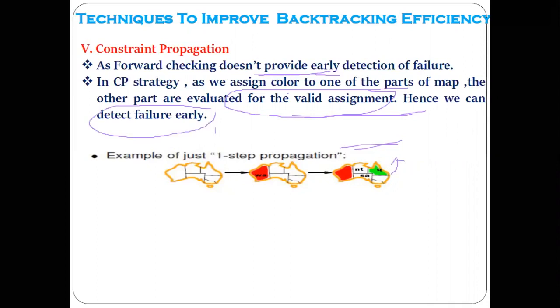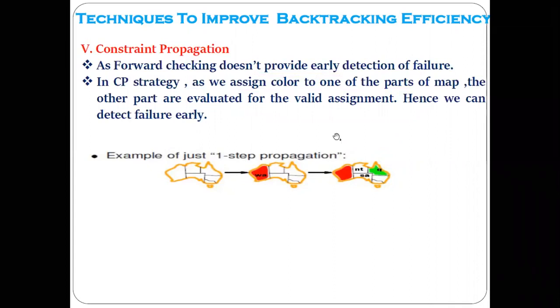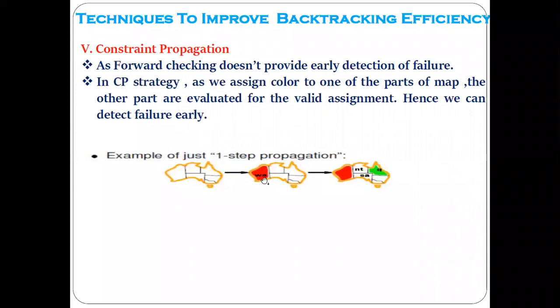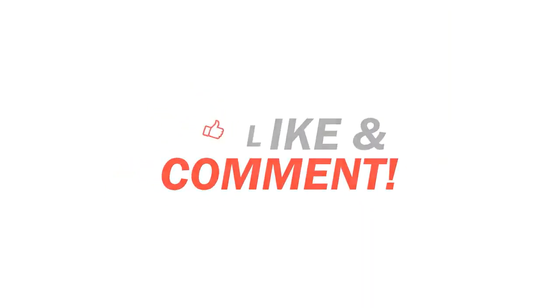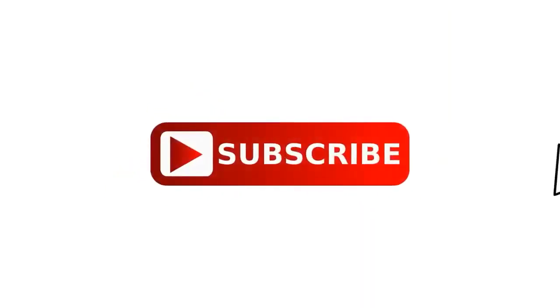To summarize the five techniques: First, Least Constraining Value — choose the value that gives most flexibility to neighbors. Second, Most Constraining Variable — choose the variable surrounded by the maximum number of neighbors. Third, Most Constrained Variable — choose the variable surrounded by the minimum number of neighbors, then assign based on fewest legal values. Fourth, Forward Checking — randomly assign colors and stop when no color remains for a region. Fifth, Constraint Propagation — assign color to one part and evaluate other parts early to detect failure. Please review the video again for clarity.